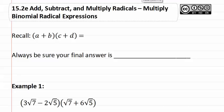15.2e: multiplying binomial radical expressions. Remember when we would have a binomial times a binomial, we would use something called FOIL, where we multiply both of the first, then the outer, then the inner, then the last.